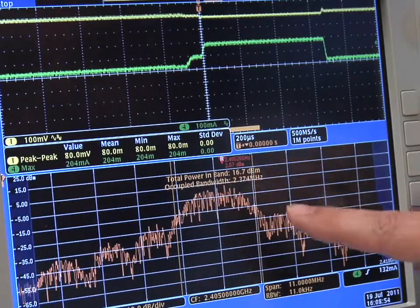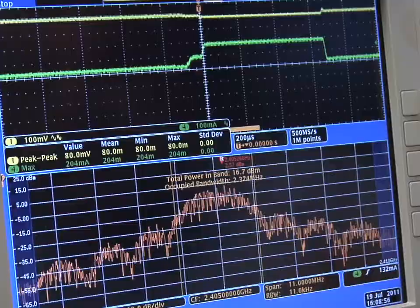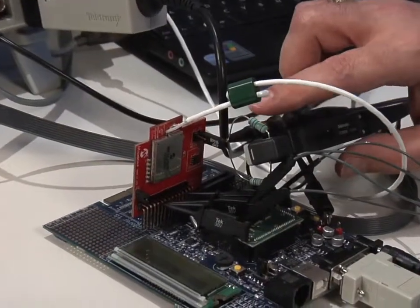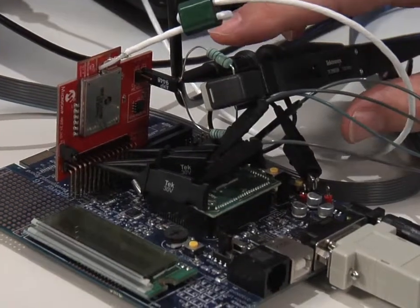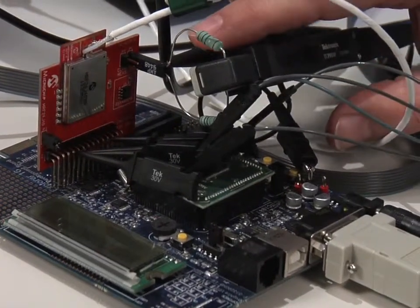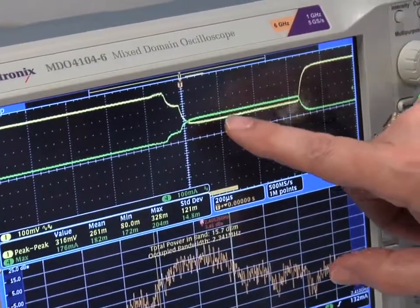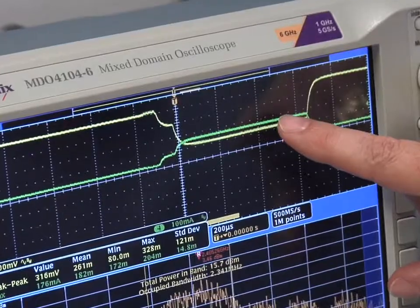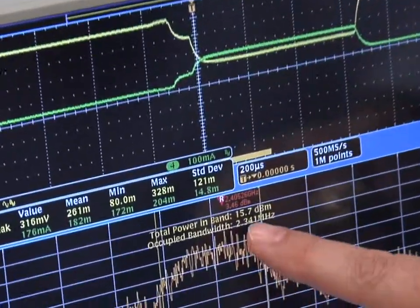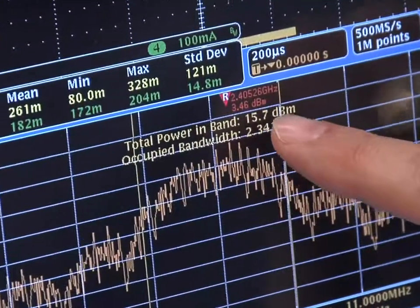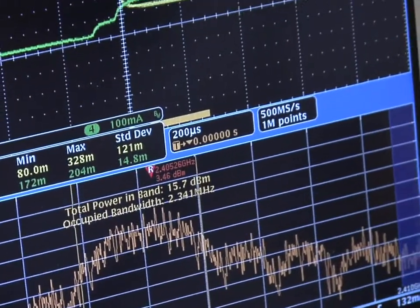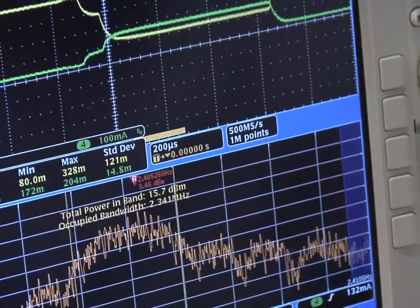Now we've added some resistance in series with the power supply to simulate a weakened battery or a soft power supply. You can see that the voltage dips substantially more, approximately four times as much. The current rises to a slightly lower peak and the output signal is a dB lower. This shows very quickly the effect of a power supply that is not adequate for powering this module.